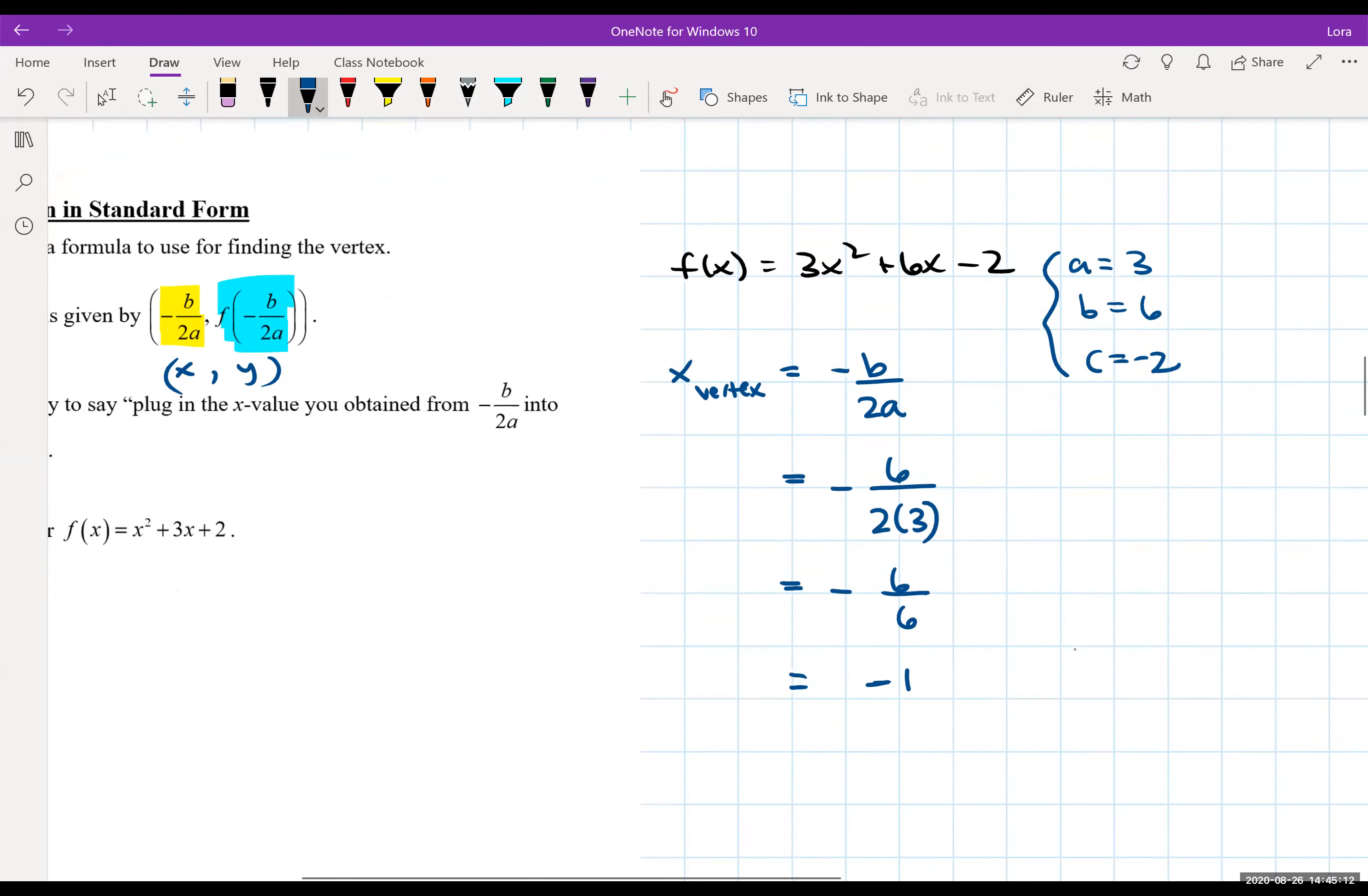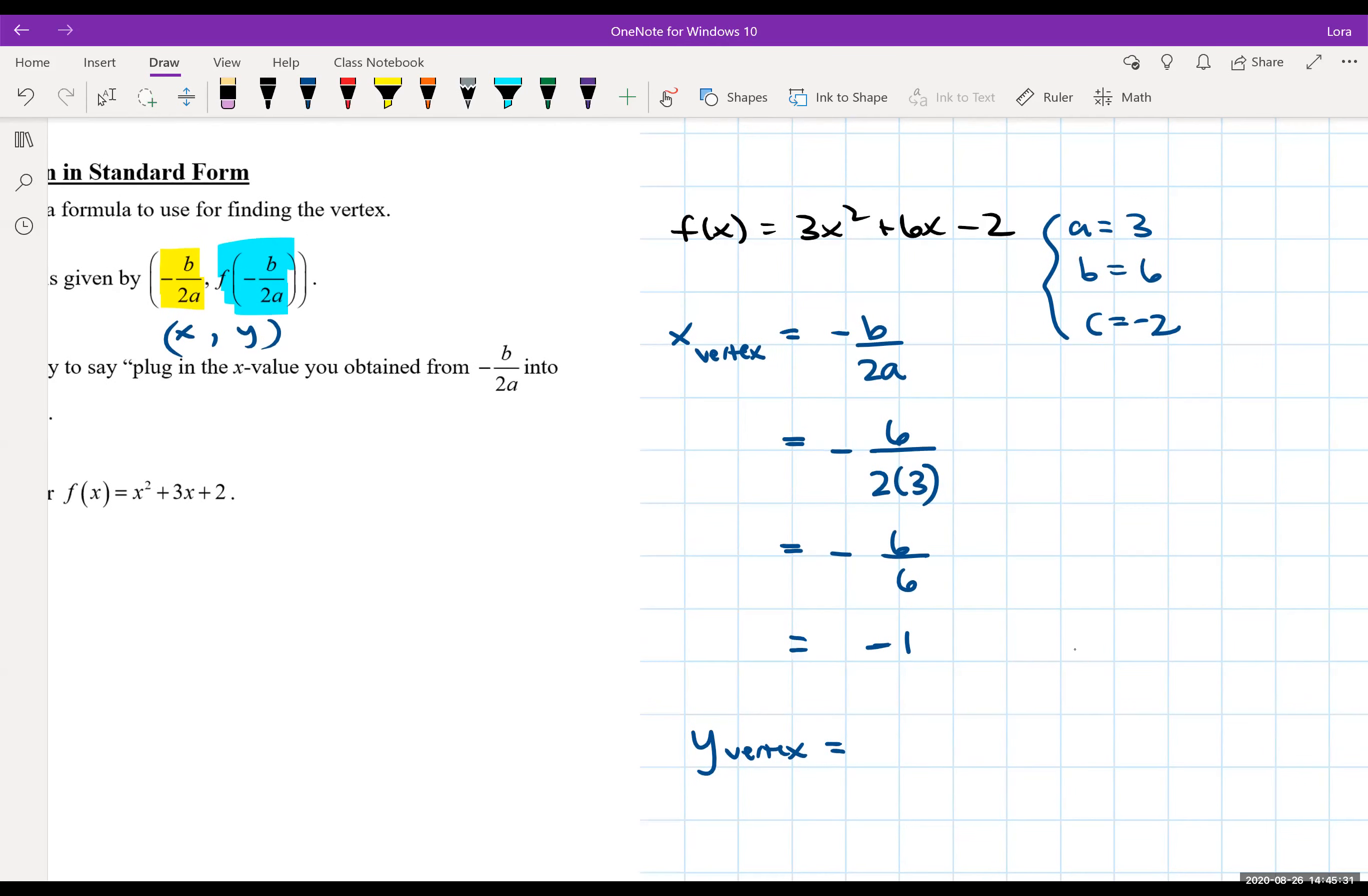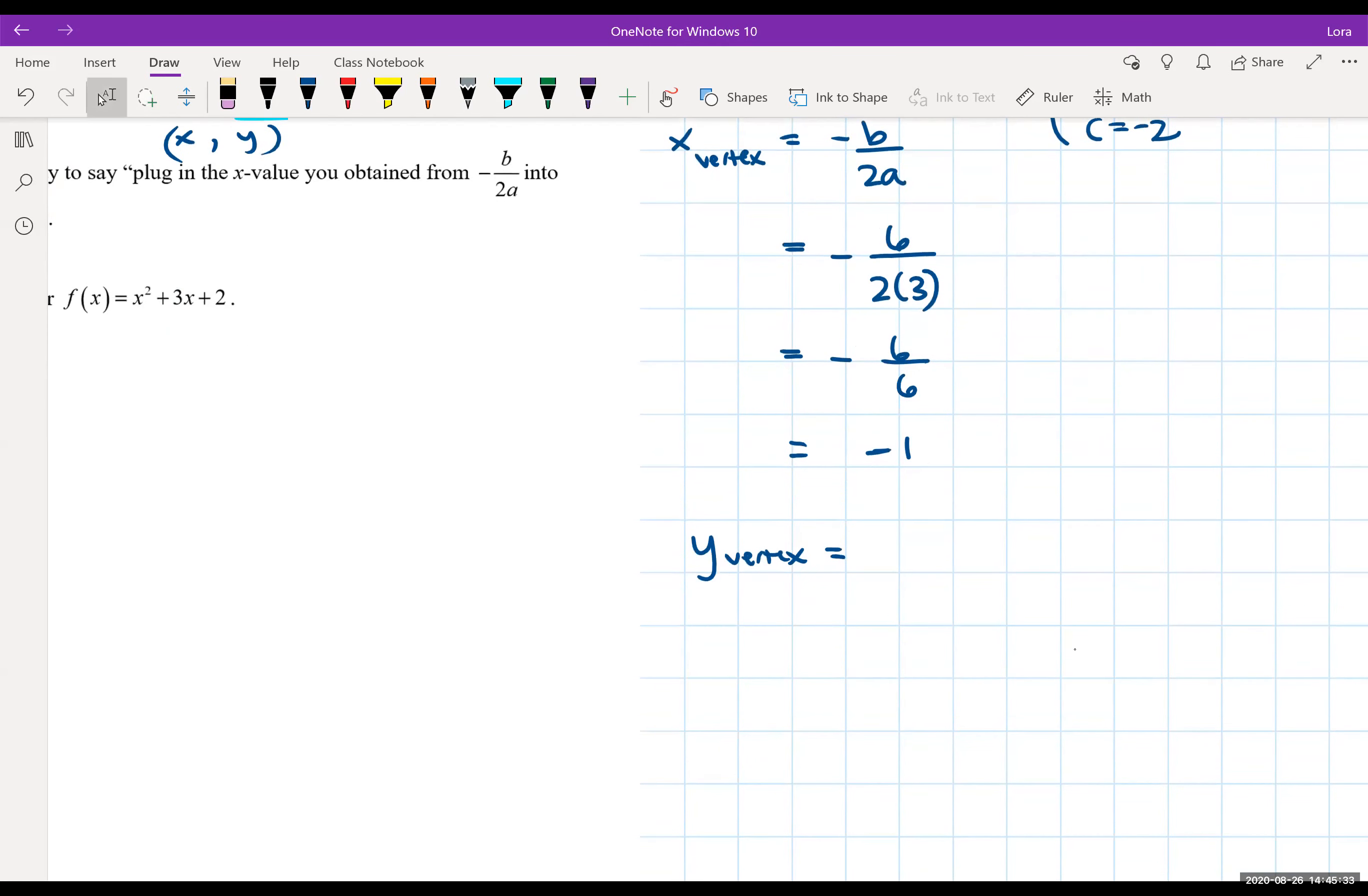And what's really nice about the vertex formula is if you do know the x value you can directly find the y value by plugging it into your function. So y value of the vertex also known as, I'll write this down, f of negative 1.